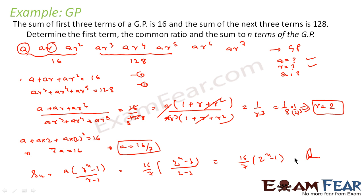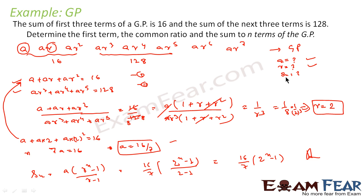To summarize: we took the GP a, ar, ar², ar³, ar⁴, ar⁵. We were told the sum of the first three terms is 16 and the sum of the next three terms is 128. We wrote two equations and divided them to get 1/r³ = 1/8, so r = 2. Substituting r = 2 into equation 1 gave a = 16/7. We then used the Sₙ formula to get the final answer.